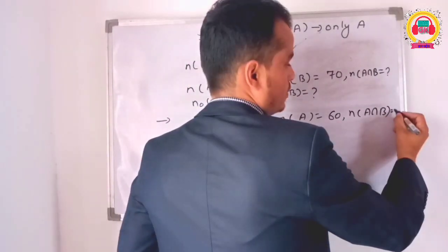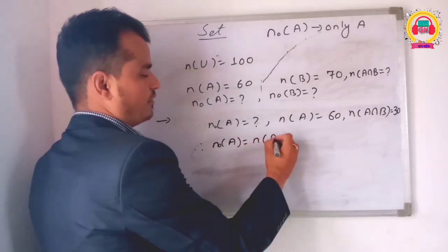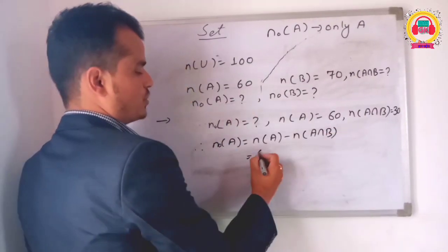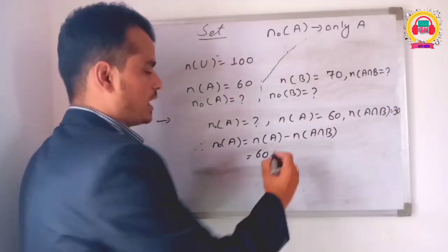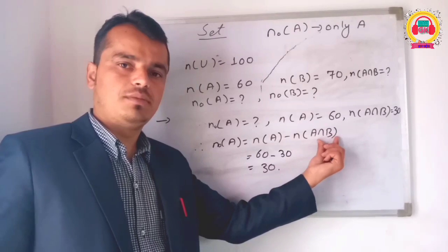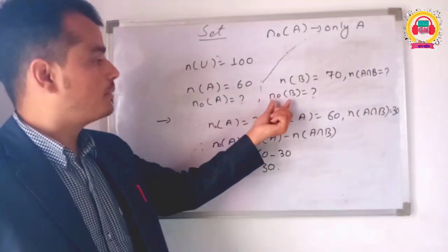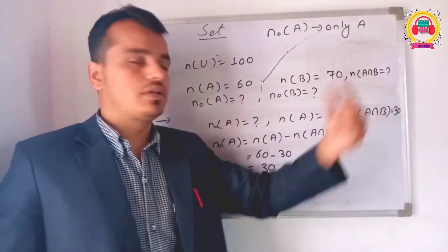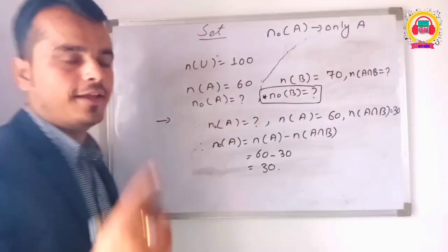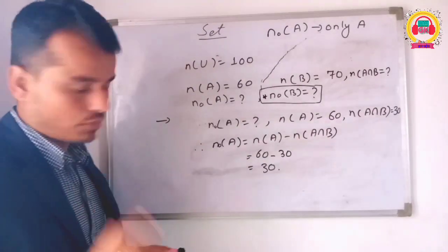Therefore, number of only A equals number of A minus number of A intersection B. Only A equals 60 minus 30, which is 30. By the same way, only B equals number of B minus number of A intersection B.